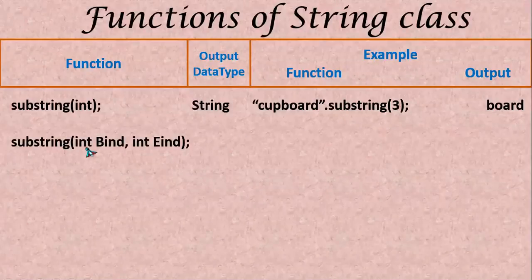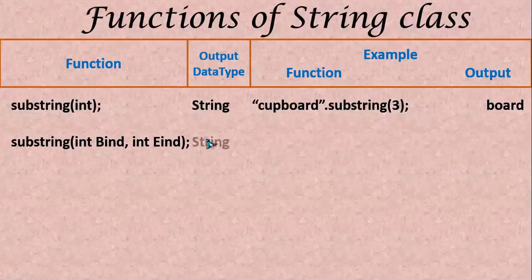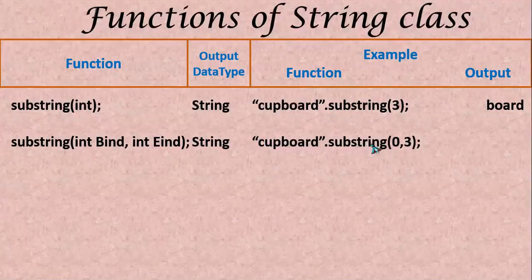Next we have here 2 integer arguments that is 2 index numbers. This is a starting index number and this is ending index number. Output type is going to be string type. For example, if we take cupboard dot substring of 0, 3. The starting is 0. The 3 is not included in the output. It is going to take 0, 1 and 2. It will have 0, c, u, p. p is 2. b that is 3 is excluded here. You will have output as c, u, p.